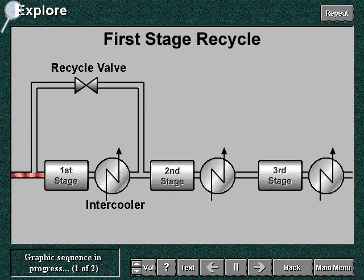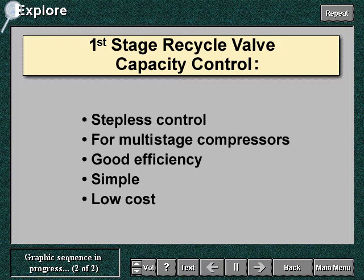Recycle controls capacity by recirculating a portion of the gas from the first stage delivery back to its suction. This system is suitable for multi-stage compressors and works by reducing with the recycle the quantity of gas that is sent to the second stage and beyond. The gas amount recycled around the first stage can be varied continuously. The system therefore is a continuous type control. The first stage handles 100 percent of the gas under capacity control, but the following stages handle only the reduced flow rate. Therefore, the efficiency of the system is good and increases with the number of stages. First stage recycle is simple and of low cost.